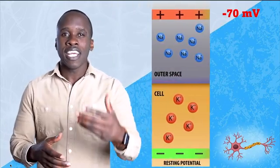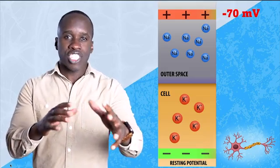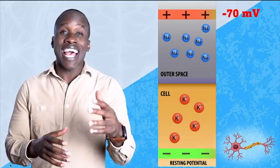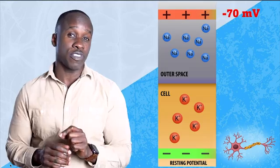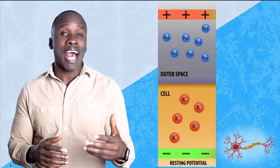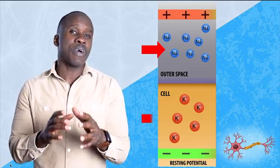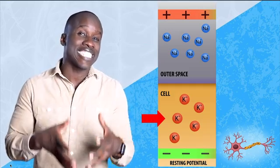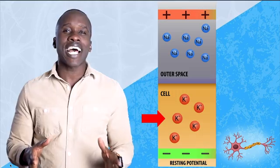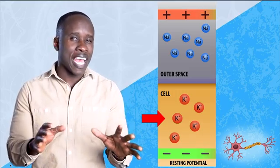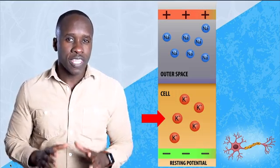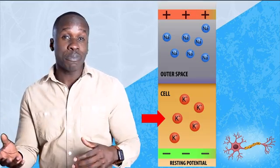When a neuron is at rest, you have a few things happening. First thing, the membrane potential, that's the charge across the membrane, that's at negative 70 millivolts. And at rest, we have sodium ions more concentrated outside the axon, and potassium ions are found more inside the axon. Why exactly that's the case is important to understand, but that's for another video. Sodium outside, potassium inside, that's the key.